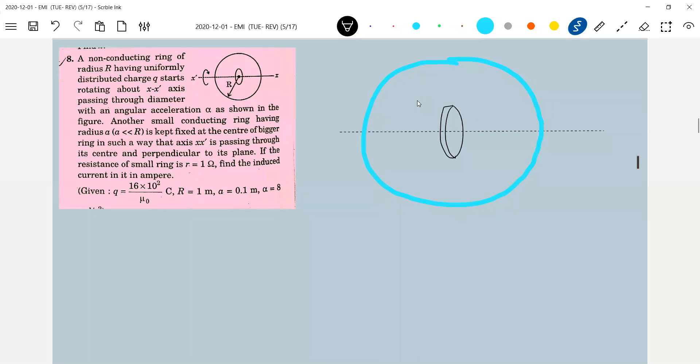Hope at least you are able to imagine the diagram now. This is the ring, so their planes are perpendicular.